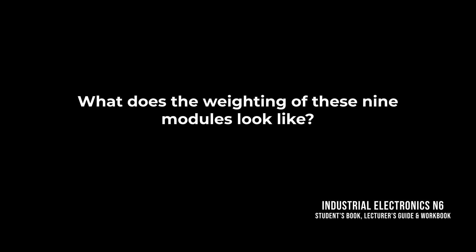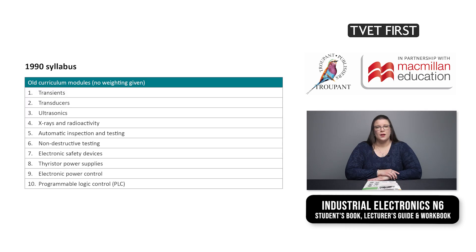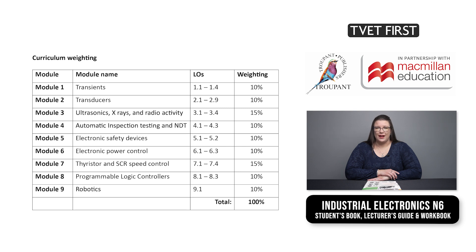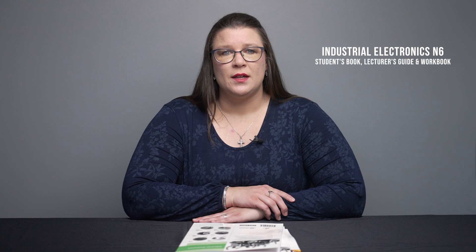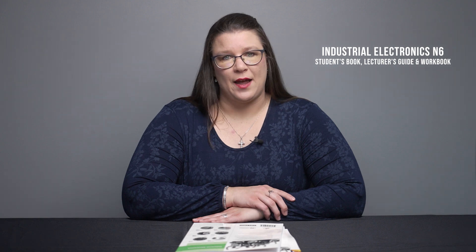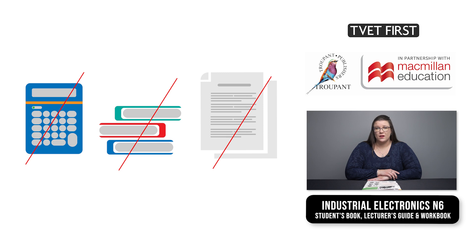What does the weighting of these 9 modules look like? No weighting was given in the old syllabus; the new weighting is now on screen. What can we expect in the exams? The Industrial Electronics N6 exam will still be a 3-hour paper counting 100 marks. It is a closed book exam, but a formula sheet will be attached to the question paper. Scientific calculators are allowed, but no programmable calculators, reference works or any previous exam papers or their memorandums.